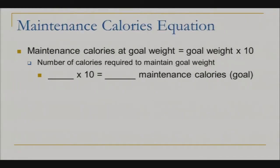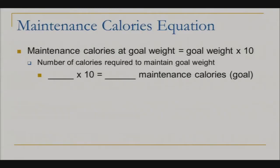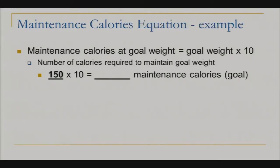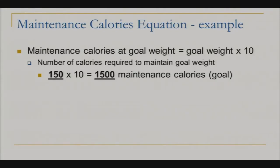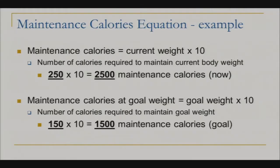Let's now calculate your maintenance calories at your goal weight. The second line allows you to calculate your maintenance calories at your goal weight. Plug in your goal weight, multiply that by 10, and that will give you your maintenance calories at your goal weight. So if your goal weight is 150 pounds, multiply by 10, that would be 1,500 calories to maintain your goal weight.